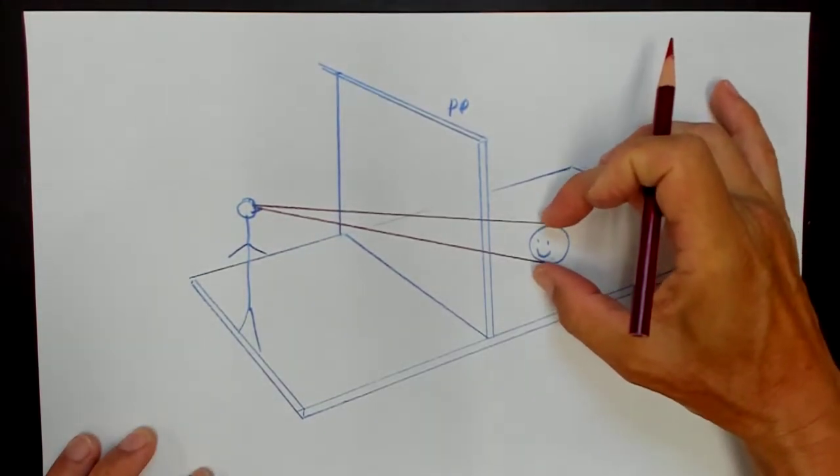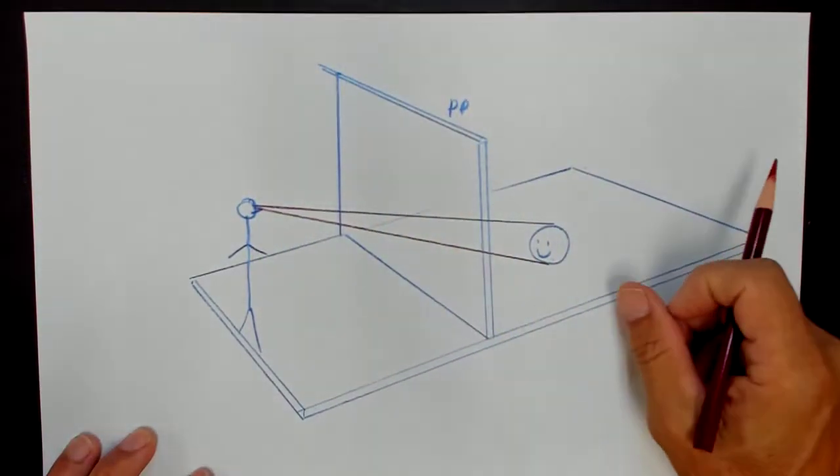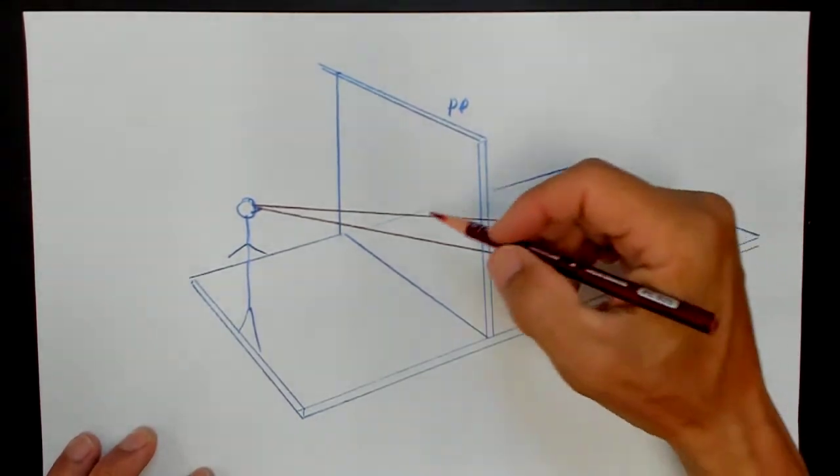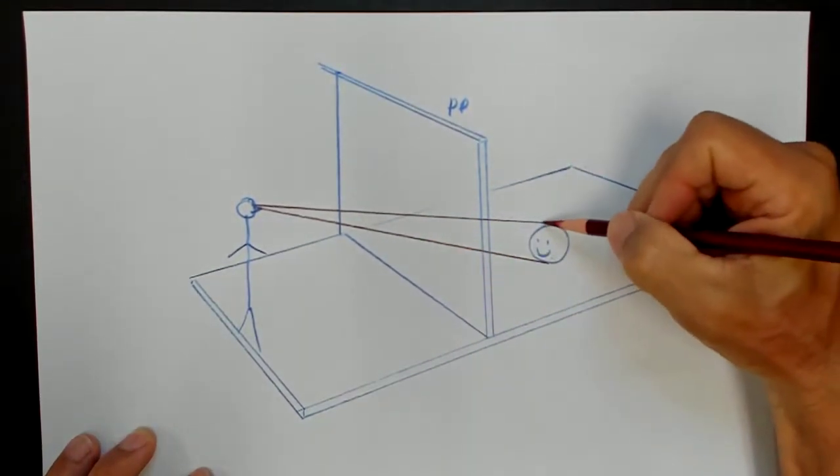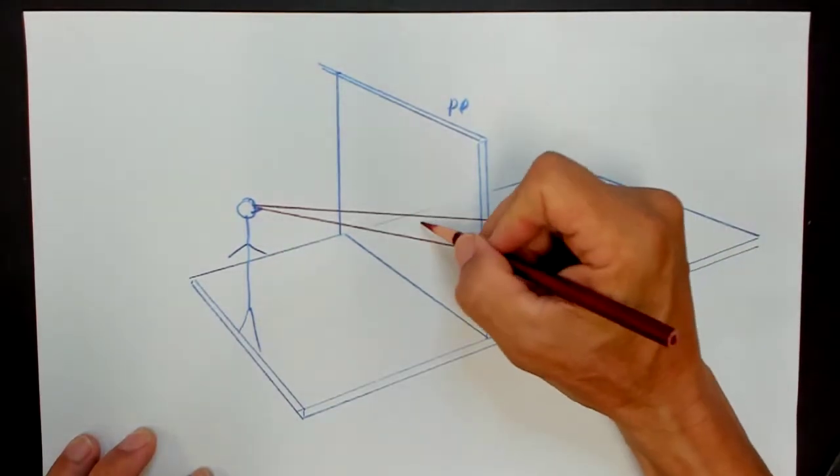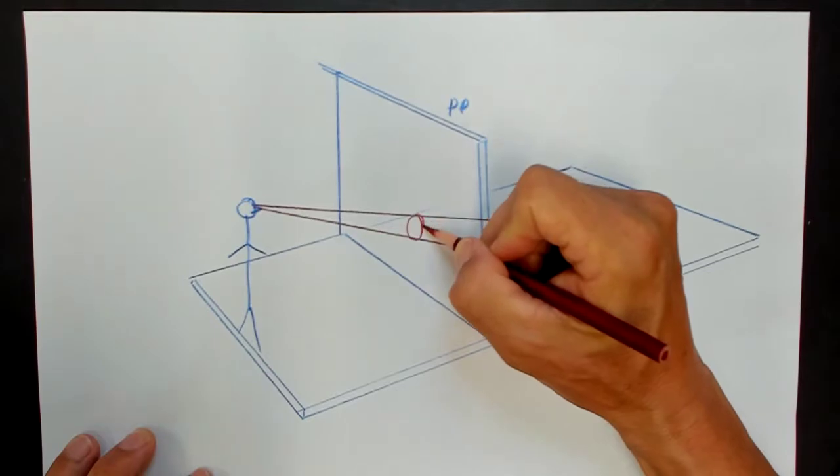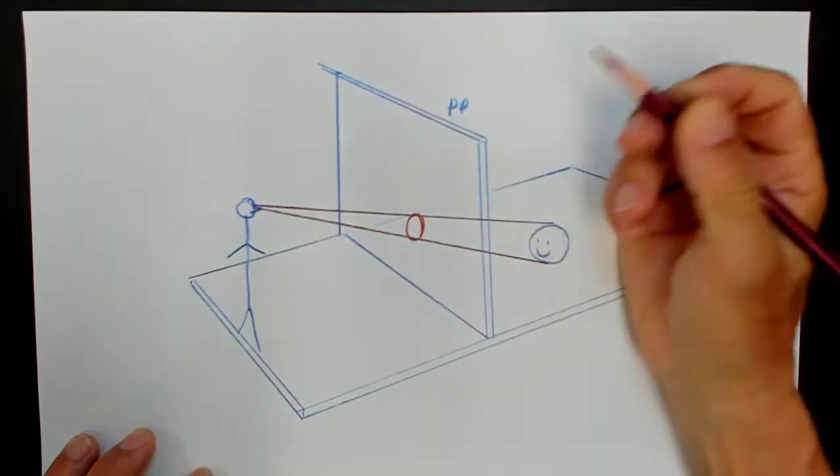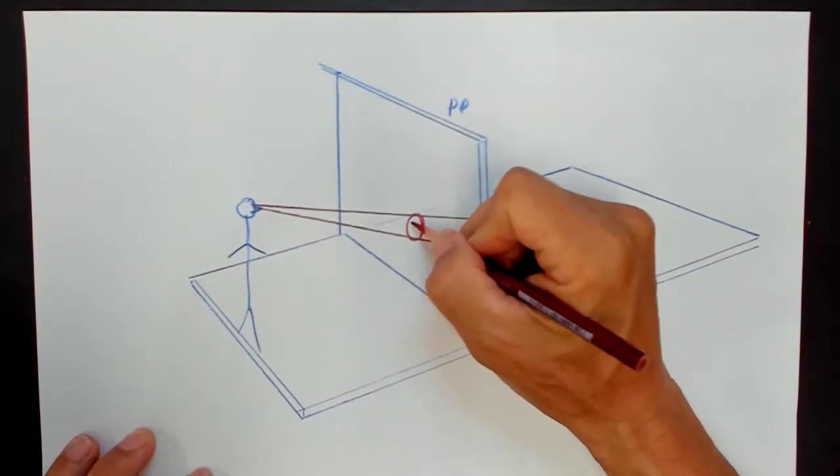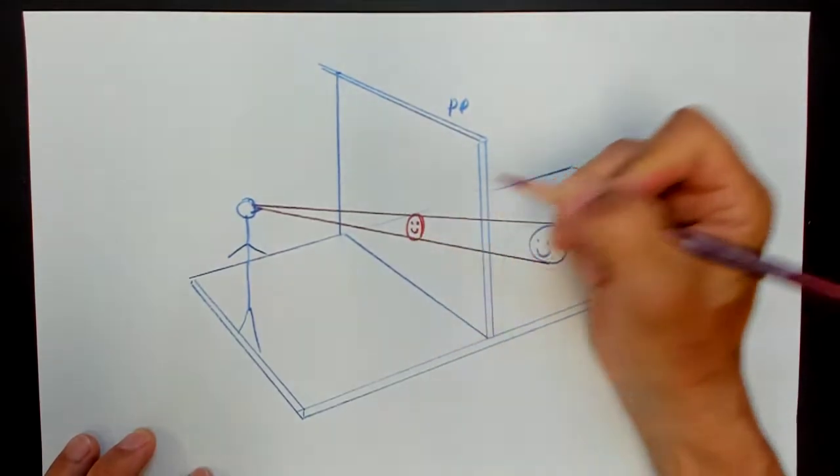Light rays are bouncing off the surface and projecting to the eye. Where the intersection of these rays, where they hit the surface of this piece of glass, that is your intersection. That's where the image is.